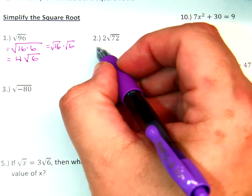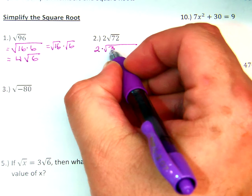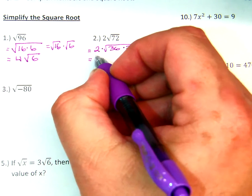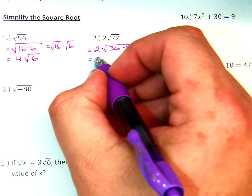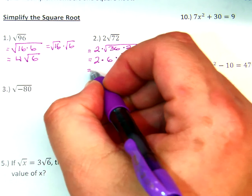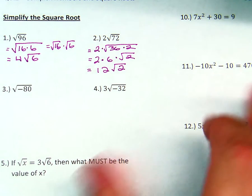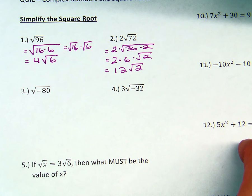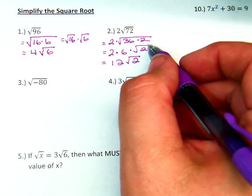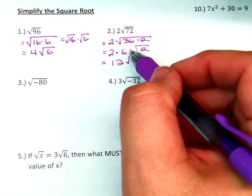Alright, for number 2: 2 times the square root of 36 times 2. So what's the square root of 36? You have 2 times 6 times the square root of 2, which is 12 times the square root of 2. The square root of 2 never went anywhere — the square root of 2 doesn't go away, just like the 2 in the front doesn't go away. You can't just have something disappear.